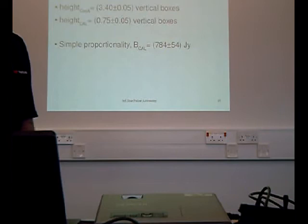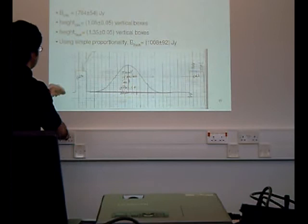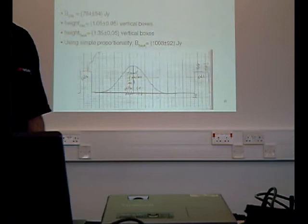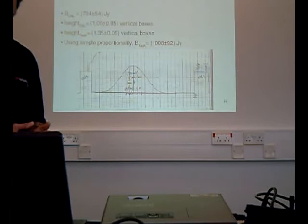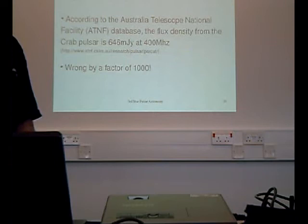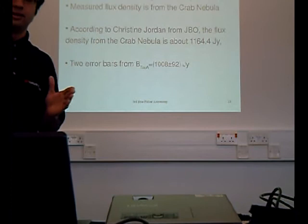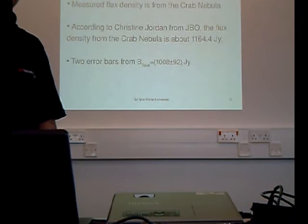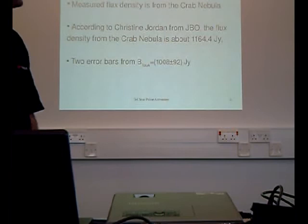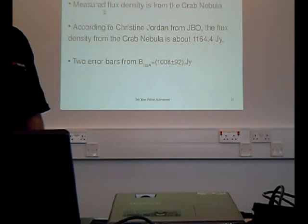Now we scan across the crab pulsar, and using the same technique we have cal and the crab pulsar. We got the crab pulsar flux density to be about 1,008 Jansky. And comparing that to the ATNF database, mine was 1,000, so three orders of magnitude wrong. And that's because the telescope was measuring the energy from the crab nebula instead of just the pulsar. And the crab nebula is excited by all the energy from the magnetic field creating synchrotron radiation in the crab nebula. And according to Christian Jordan, the flux density is just about right within 2 standard deviations.